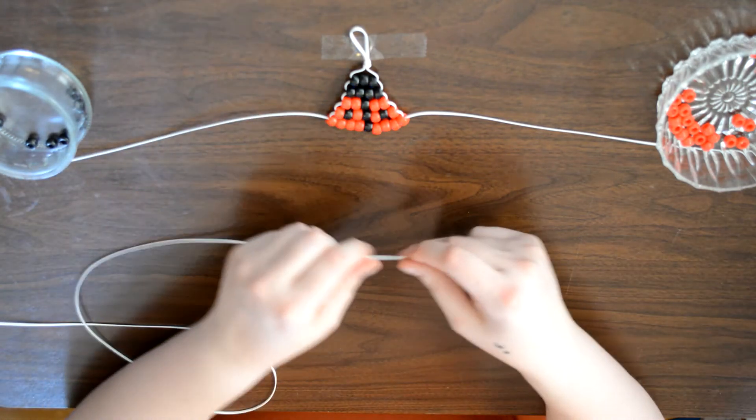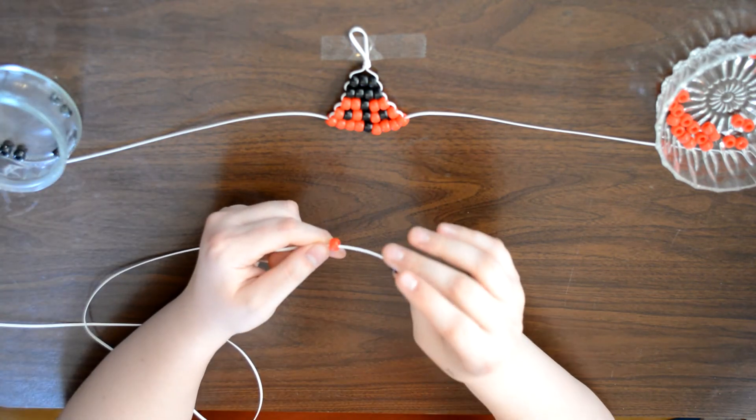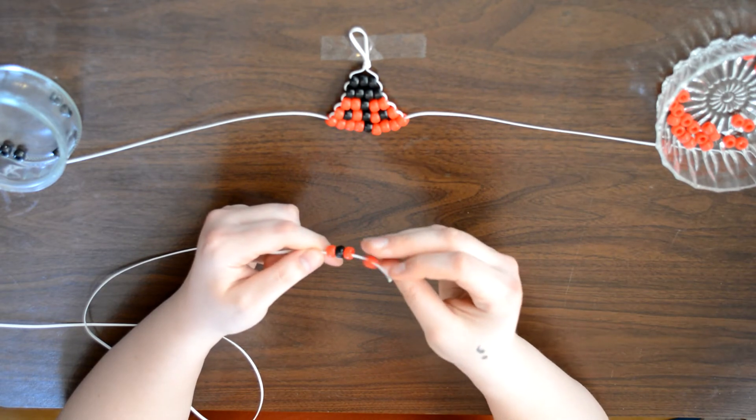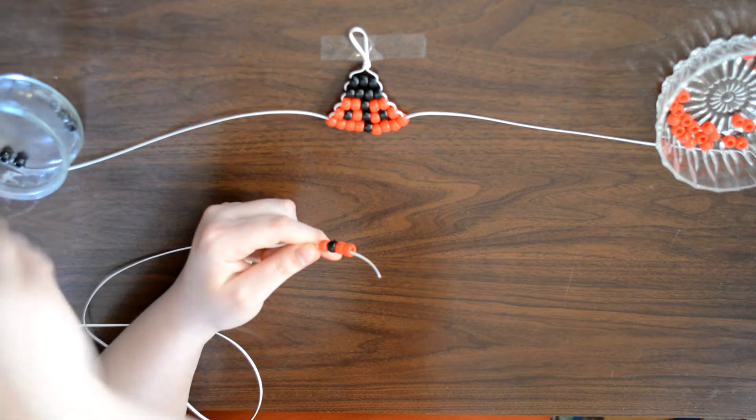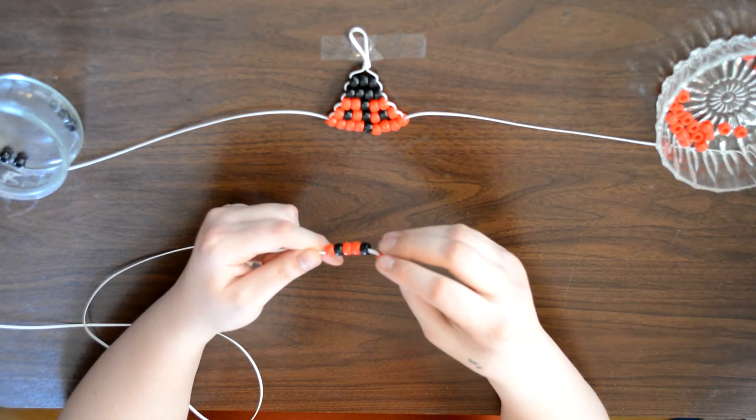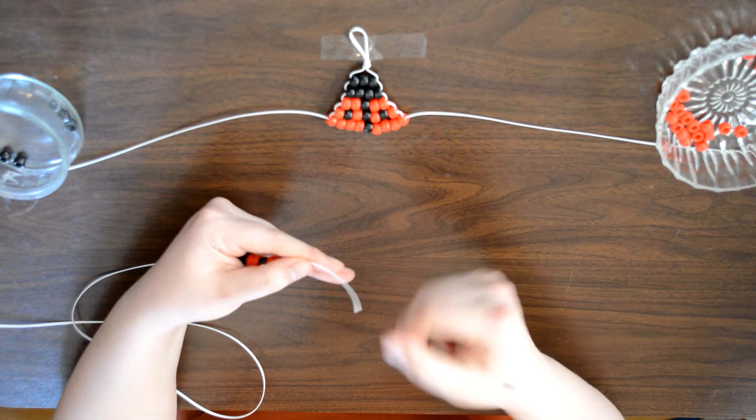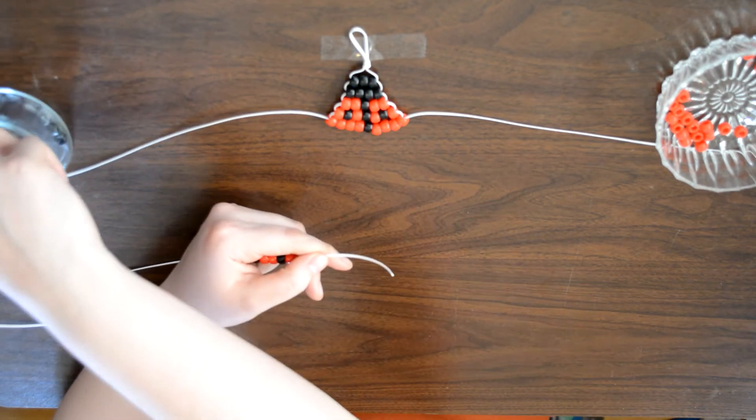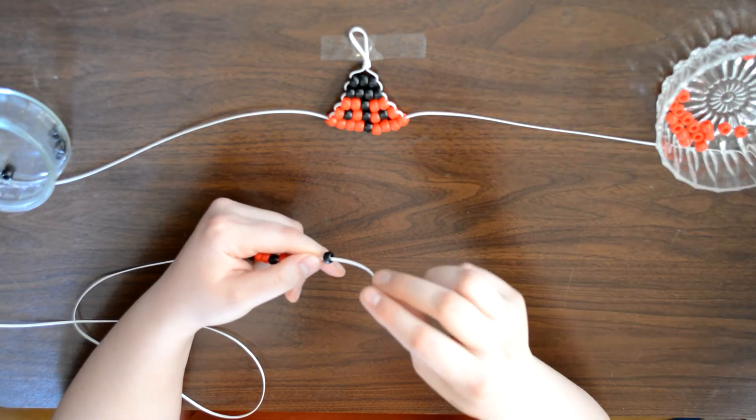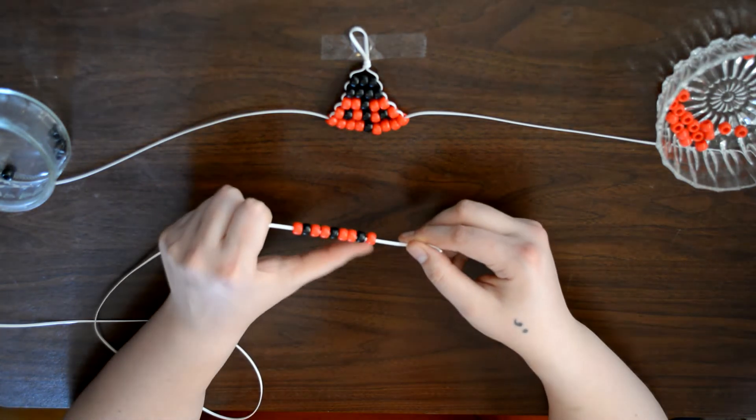So then we go back with our left side and go one red, one black, two red, one black, two red. See, I pushed them back into my hand so that I can have this side open and not falling over. One black and one red. So red, black, red, red, black, red, red, black, red.